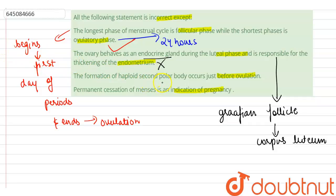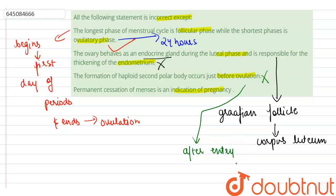The third option — the formation of the haploid second polar body occurs just before ovulation — is also incorrect. The formation of the haploid second polar body actually occurs after the entry of sperm, just before fusion, that is, just before fertilization.